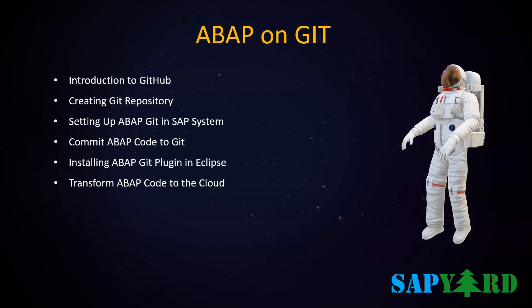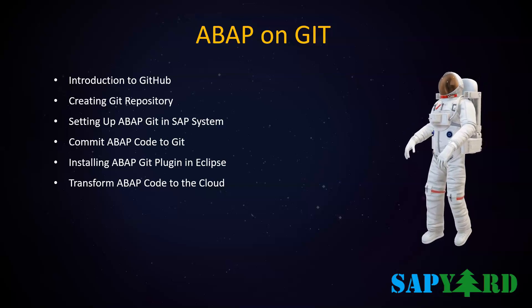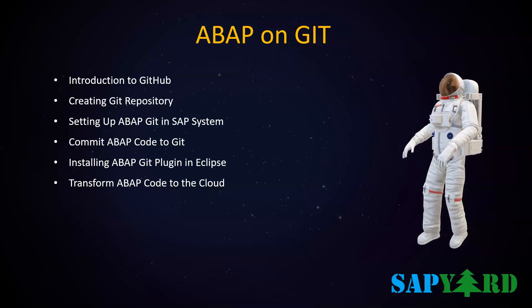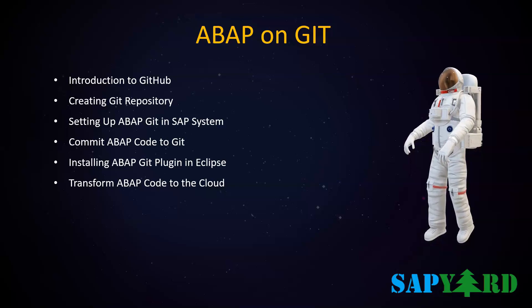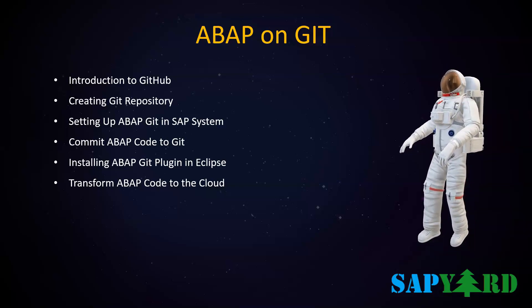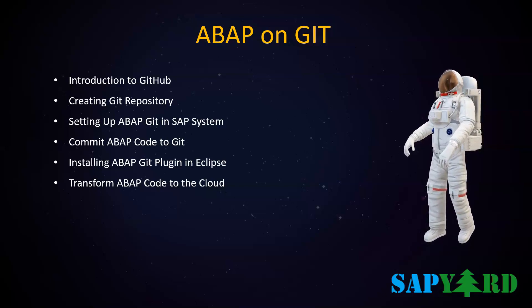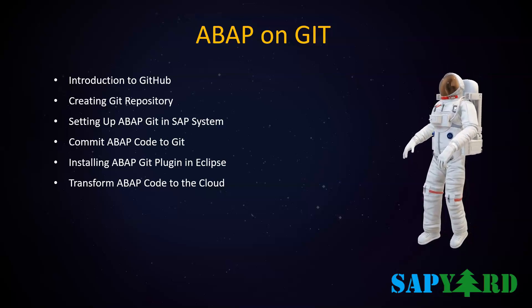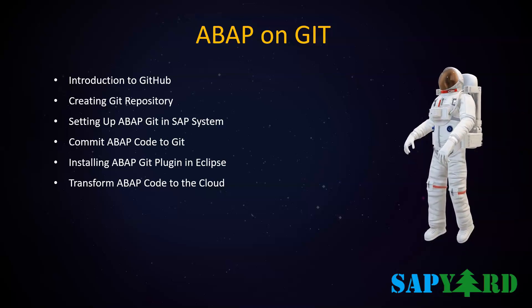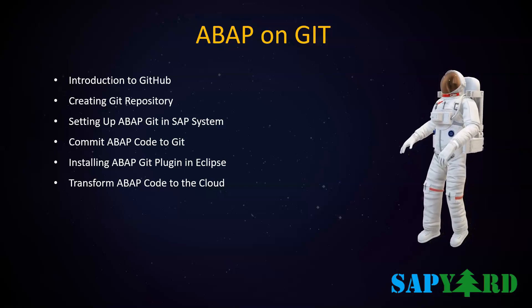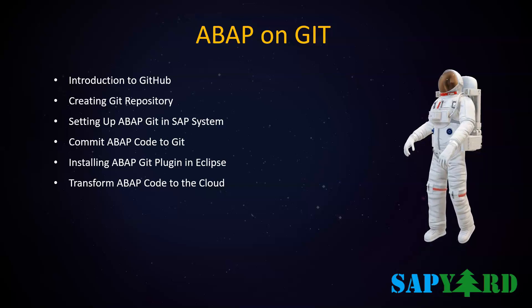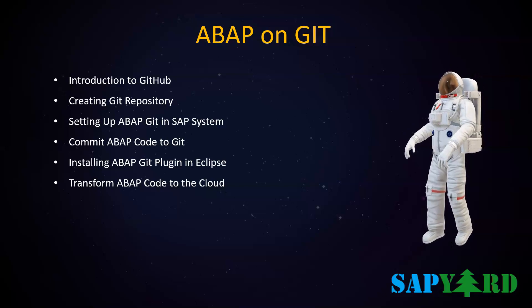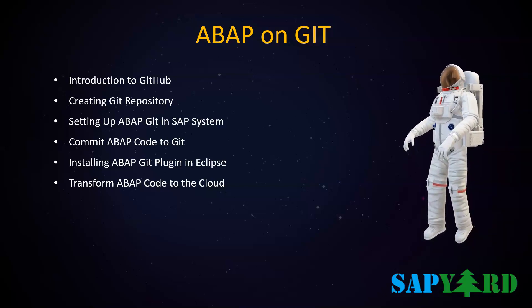Before we wrap up the course, we will learn about a non-SAP project — ABAP on Git. ABAP on Git is an open source project used as an ABAP client for Git, supported from ABAP 7.02 and above. Like any other Git repository, ABAP Git allows version control of code committed to the repository. We will introduce you to GitHub, teach you how to create a Git repository and set up ABAP Git in your SAP system, commit ABAP code to Git, install the ABAP Git plugin in Eclipse, and transform ABAP code to the cloud. In short, we can use ABAP on Git to export and import SAP development objects between SAP systems.